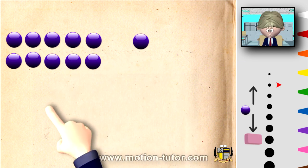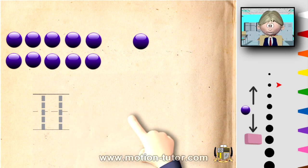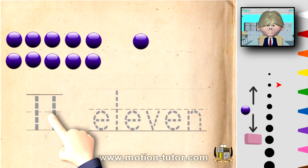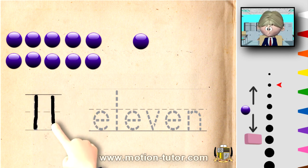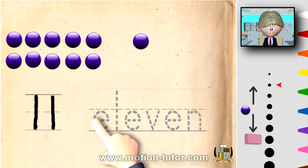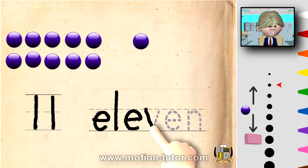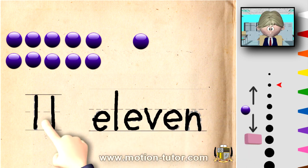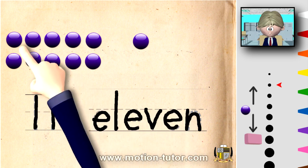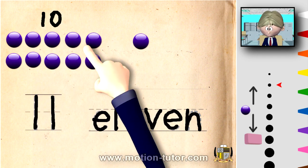So the number 11 looks like this. And the word 11 looks like this. And I'm going to write them. The number 11 is a 1 and a 1. And to spell 11, it's E, L, E, V, E, N. 11. So remember, this is 10, this whole thing is 10, and 1 more is 11.